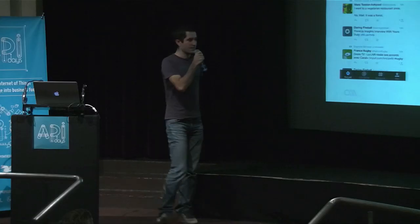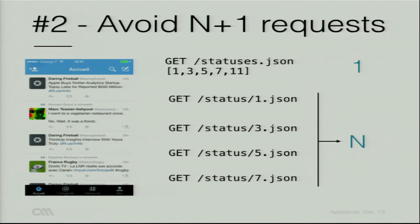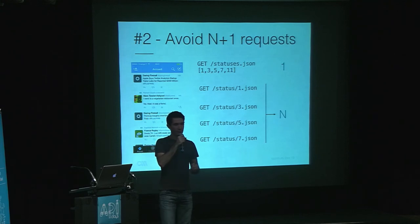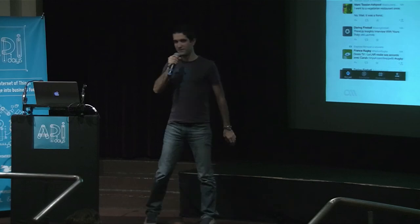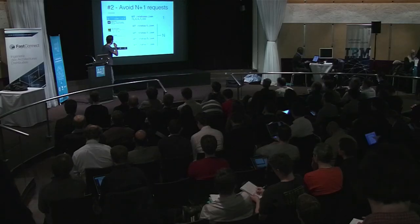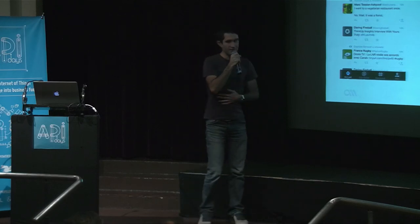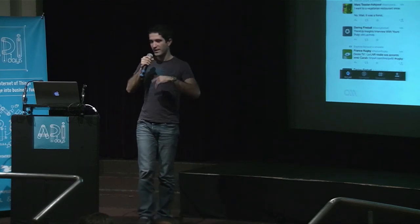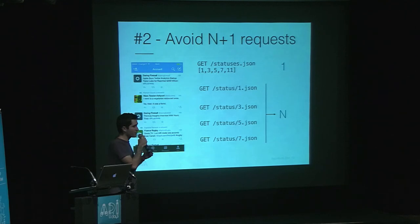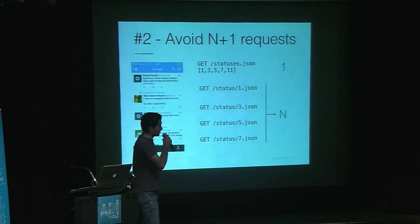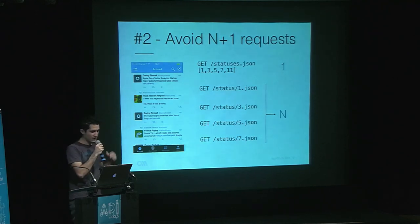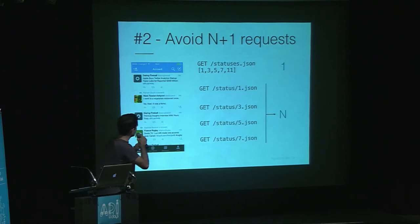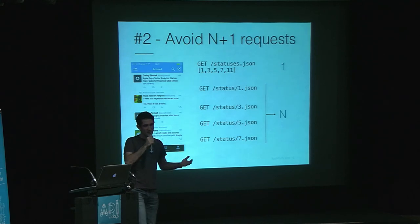This is a big problem because making one request implies overhead. Establishing a new HTTP connection requires sending packets back and forth that are pretty much useless. So the fewer requests you can make, the better. When you make top-level or master APIs that return a list, you have to at least provide an option to retrieve as much information as possible.